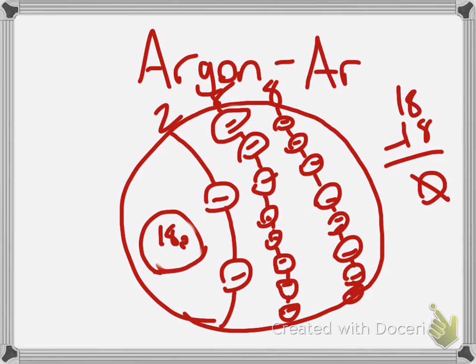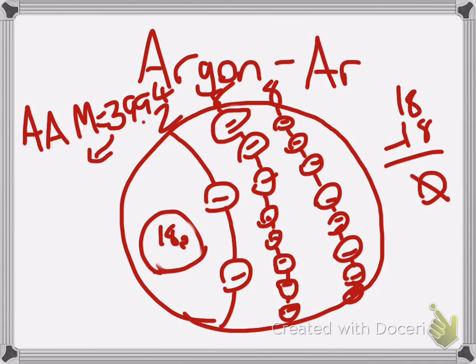Now we're going to find the atomic mass of the atom. The average atomic mass of argon is 39.94, and so we're just going to round this up to 40.